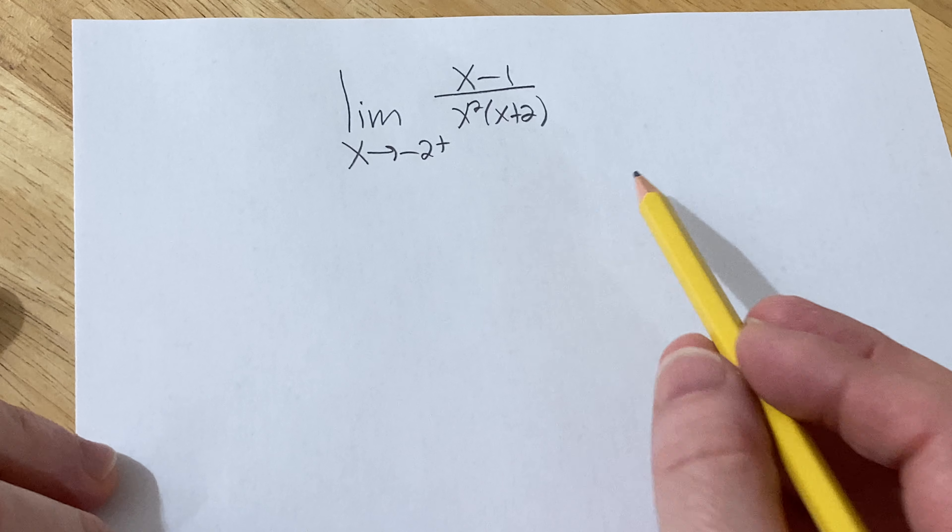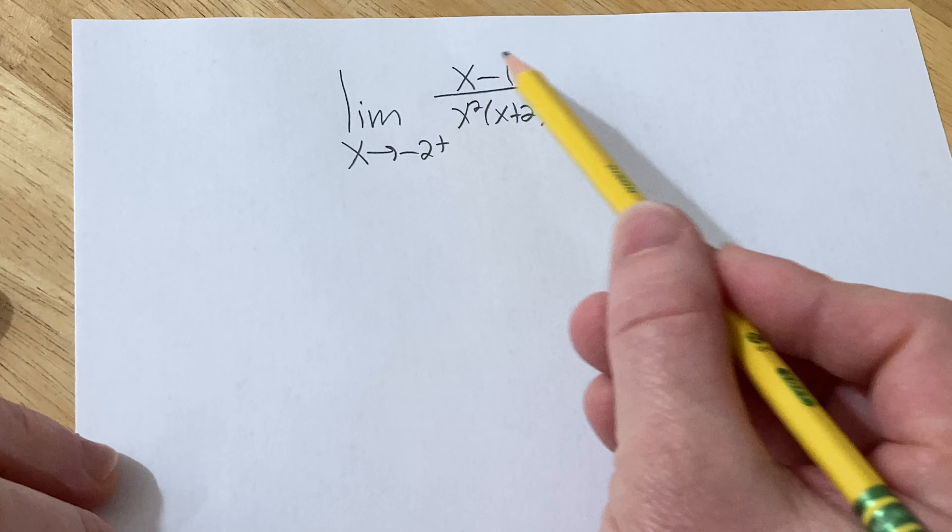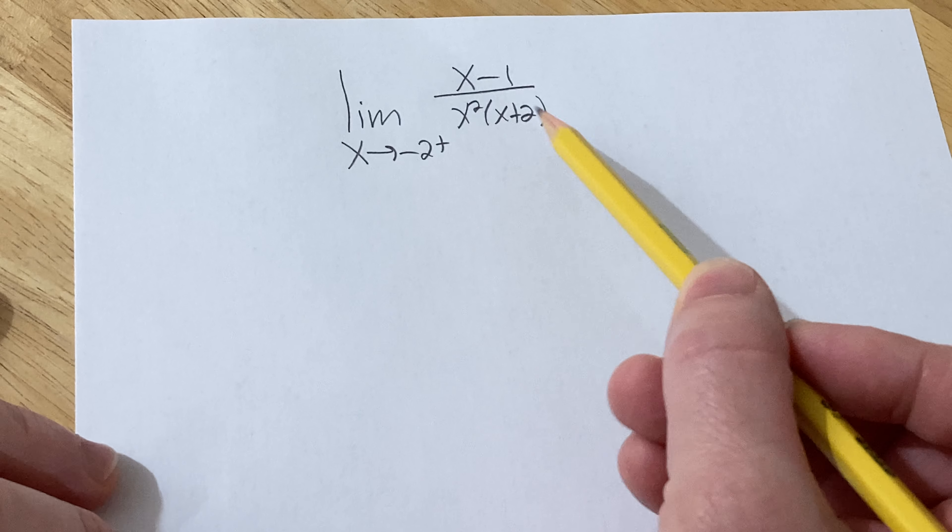Hello, in this video we're going to find the limit as x approaches negative 2 from the right of x minus 1 over x squared times x plus 2.